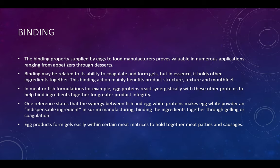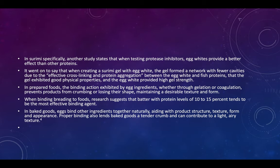By binding ingredients together through gelling or coagulation, egg products form gels easily within certain meat matrices to hold together meat patties and sausages. Studies state that compared to other proteins, egg white provides a better binding effect. When creating a surimi gel with egg white, the gel forms a network with fewer cavities due to effective cross-linking and protein aggregation between the egg white and fish protein. That gel exhibits good physical properties and egg white provides higher gel strength.